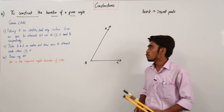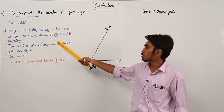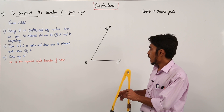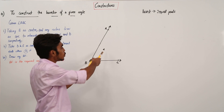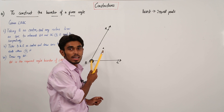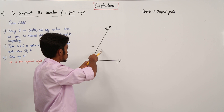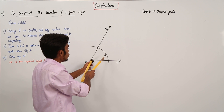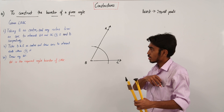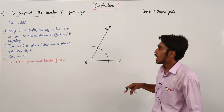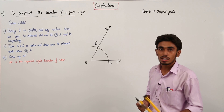Let us start with the construction. The first step is taking B as center and any radius, draw an arc to intercept BA and BC at E and D respectively. So I am going to take B as the center, take this pivot at point B, and draw an arc of any radius. We have drawn an arc and it is intersecting BA at E and BC at point D. So the first step is done.